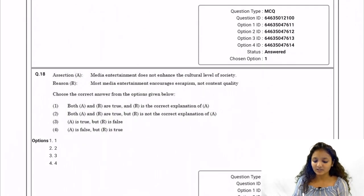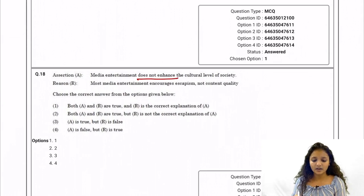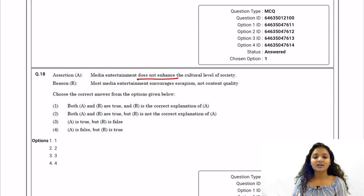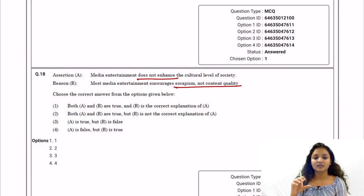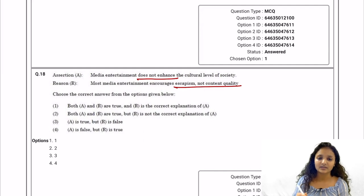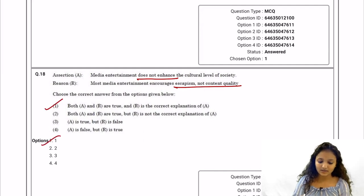Question 18: Assertion — media entertainment does not enhance the cultural level of society. Reason — most media entertainment encourages escapism and not content quality. The assertion is correct and the reason given is the correct explanation for the assertion. So option one is correct.